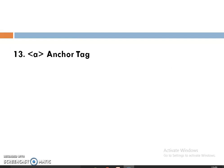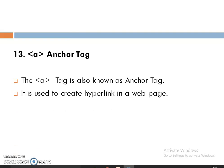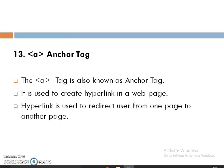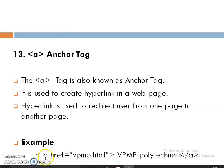The Anchor tag is used to define a link in a web page and create a hyperlink. A hyperlink is used to jump from one page to another page. For example, using the anchor tag with href referencing a document — 'VPMP Polytechnic' is my hypertext, so whenever I click on 'VPMP Polytechnic', my document will jump to the vpmp.html document.